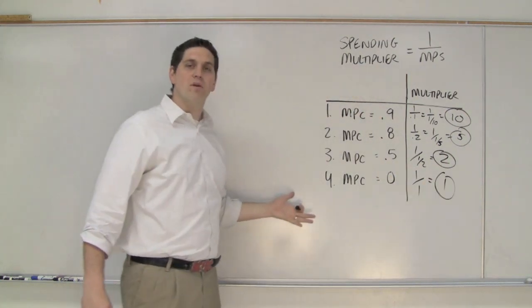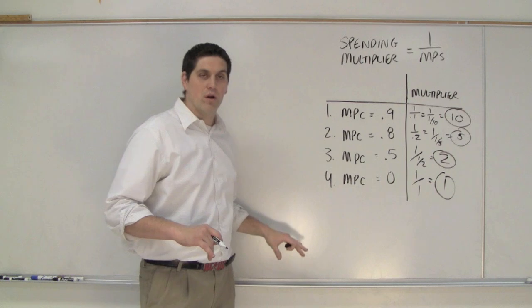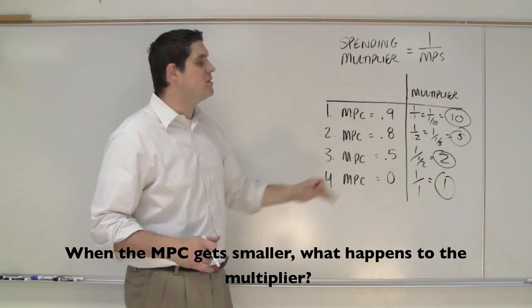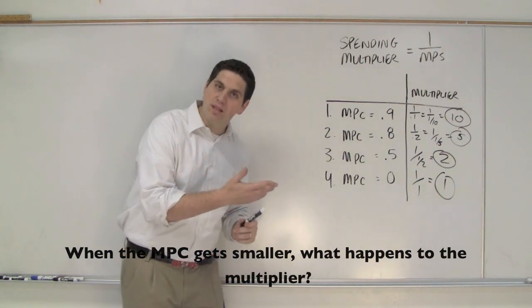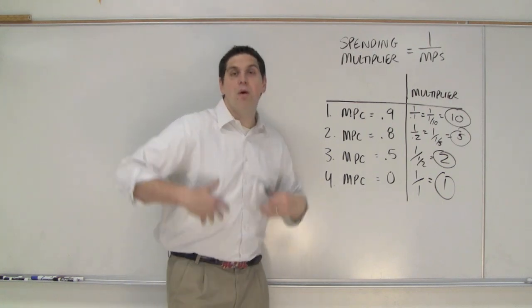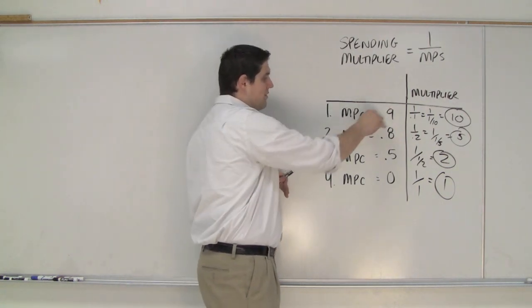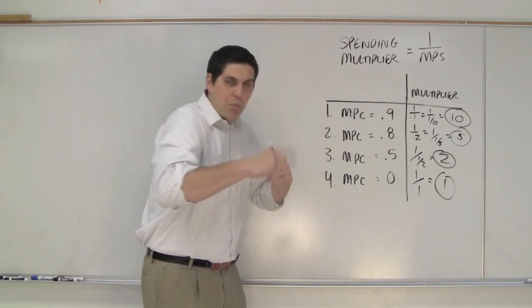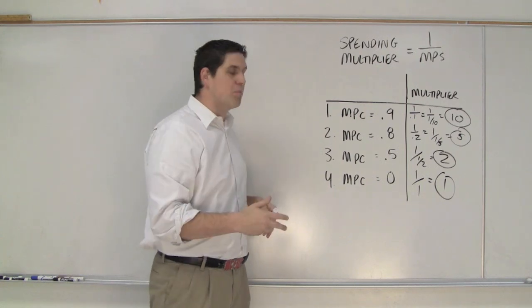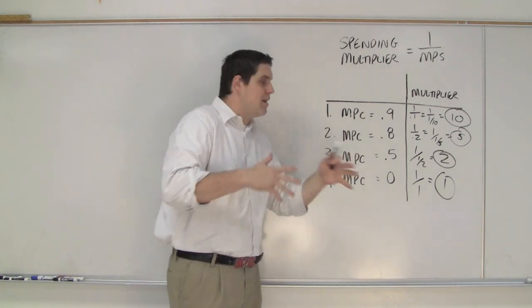Now, look at the numbers. This is why I showed it to you in this exact order. As the marginal propensity to consume gets smaller, what happens to the size of the multiplier? It gets smaller, which makes sense. If you put money in the system and people spend a whole lot of it, 90% of it, then that multiplier is going to be super high, and it's going to multiply a lot, because other people get it, and other people get it, and it multiplies a lot.